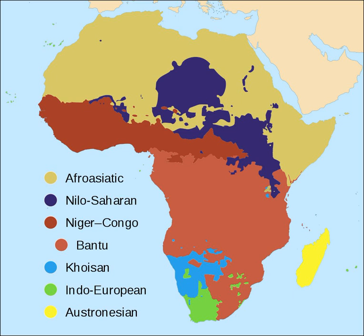The Afroasiatic homeland is uncertain. However, the family's most extensive branch, the Semitic languages — including Arabic, Amharic and Hebrew among others — seems to have developed in the Arabian Peninsula. The Semitic languages are now the only branch of Afroasiatic spoken outside Africa. Some of the most widely spoken Afroasiatic languages include Arabic, Somali, Berber, Hausa, Amharic and Oromo. Of the world's surviving language families, Afroasiatic has the longest written history, as both the Akkadian language of Mesopotamia and Ancient Egyptian are members.